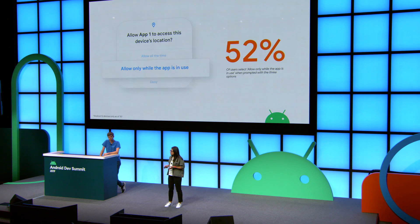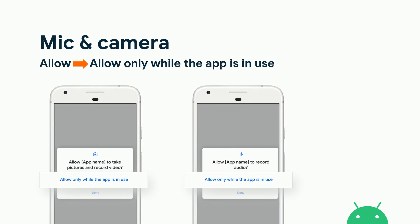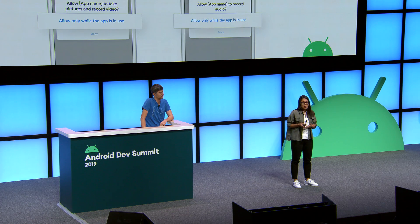We are also seeing that users are choosing to share less data. With the new granular location permission we introduced in Android 10, we're seeing in our data that over half the users are selecting "while the app is in use." Through our studies, we've learned that users actually understand what "while in use" means and are making their choice intentionally. Our data also highlights very high sensitivity towards mic and camera. We removed access to background mic and camera, but in our future release of Android, we'll actually change the wording to say "while in use" so the user doesn't have to worry about their data being accessed in the background.